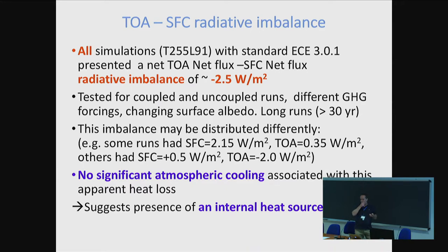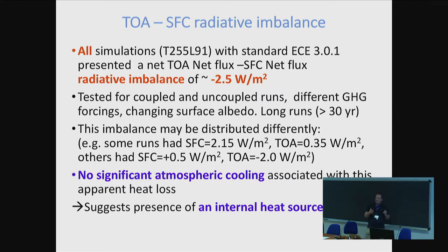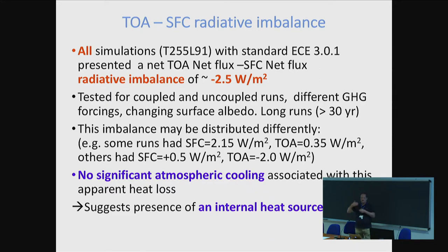It's a large heat source because it has to be compared to what we're interested in in a climate simulation, which is anthropogenic forcing - which is something around 0.5-0.6 W/m². So 2.5 is embarrassing. You could live with that if we were sure it's always the same and we understood what causes it. But if we don't know the processes which are at the base of this energy production, how can I trust a future projection if maybe these processes may change in a different setup?